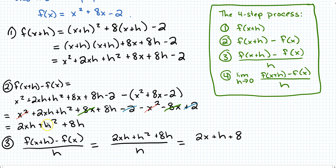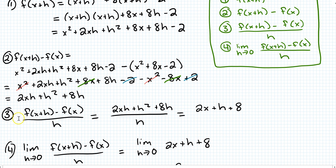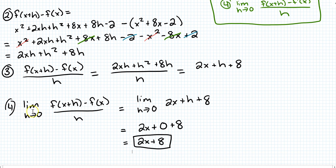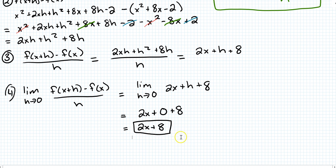Distributing the minus sign let me cancel a whole bunch of terms, leaving 2xh plus h squared plus 8h. Step 3 says divide by h, so I copied down that result and divided by h, canceling an h from each term in the numerator to get 2x plus h plus 8. Finally, taking the limit as h approaches 0 means plugging in 0 for every h, giving 2x plus 0 plus 8, which simplifies to 2x plus 8 — the derivative of the original function.